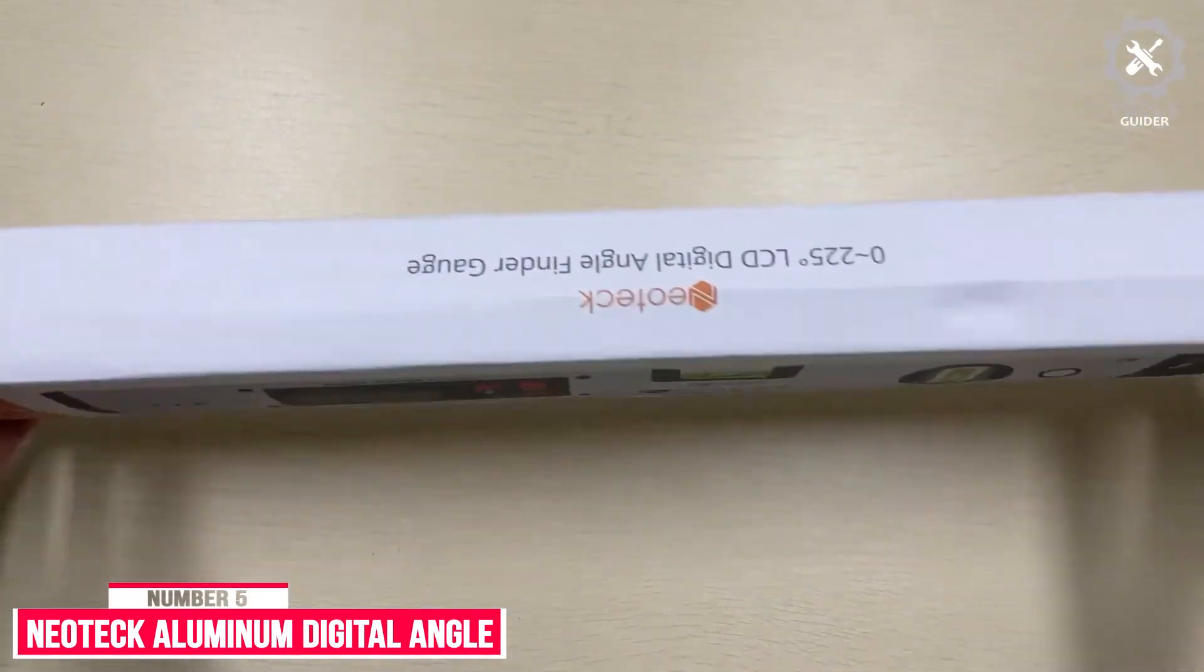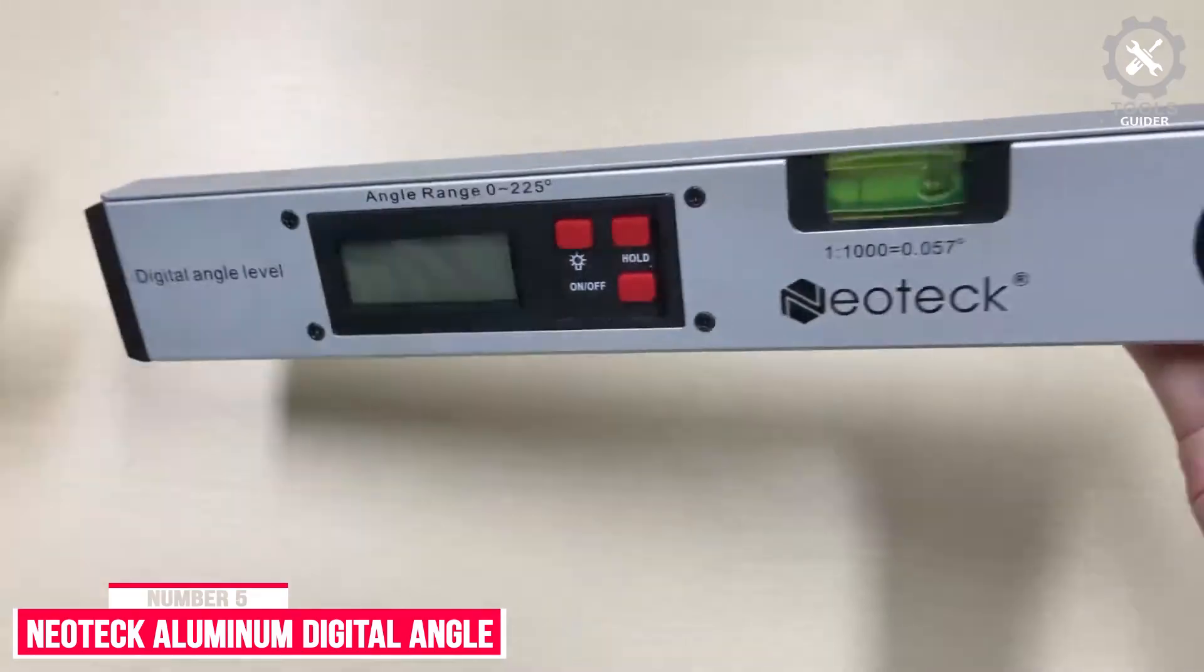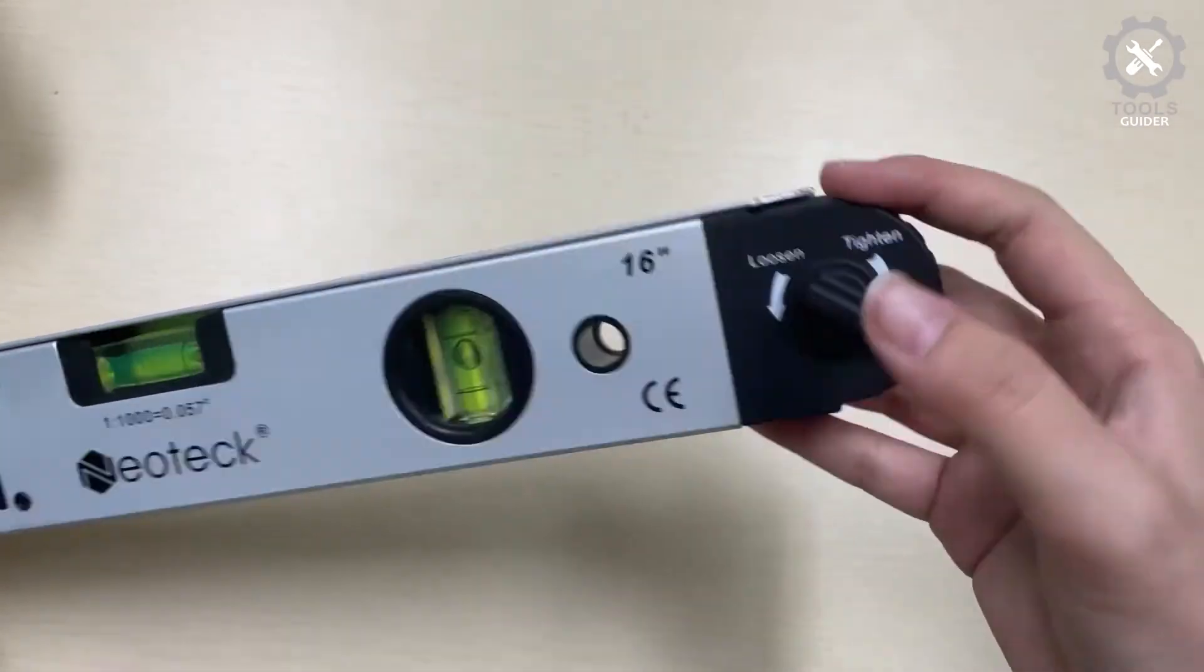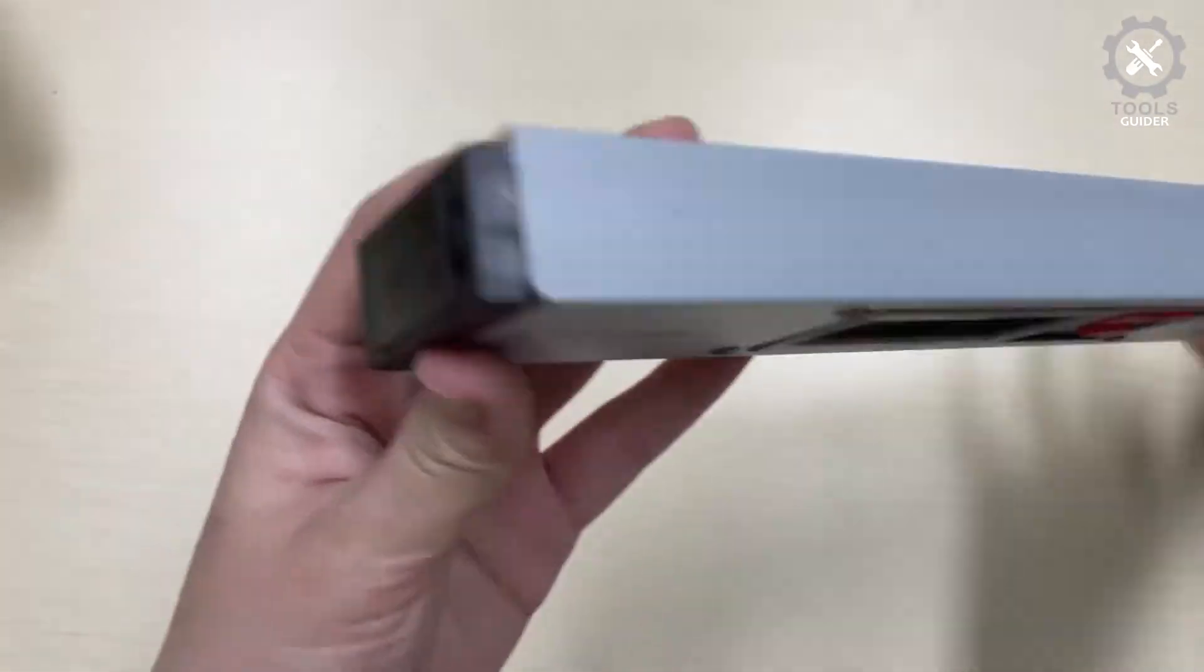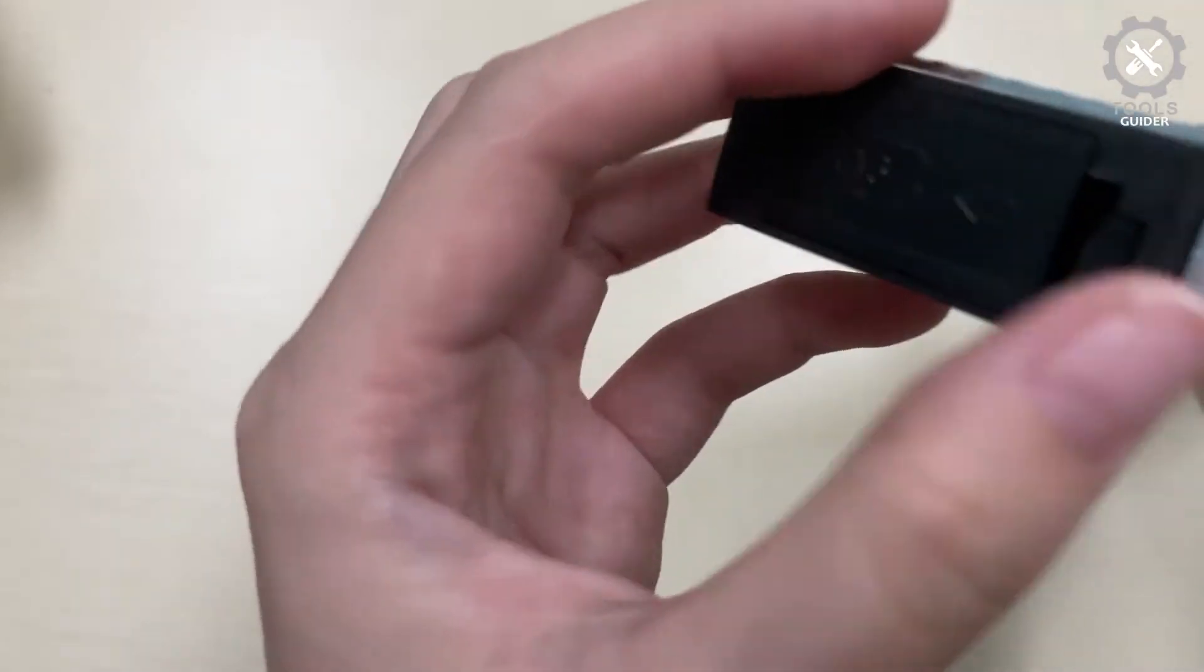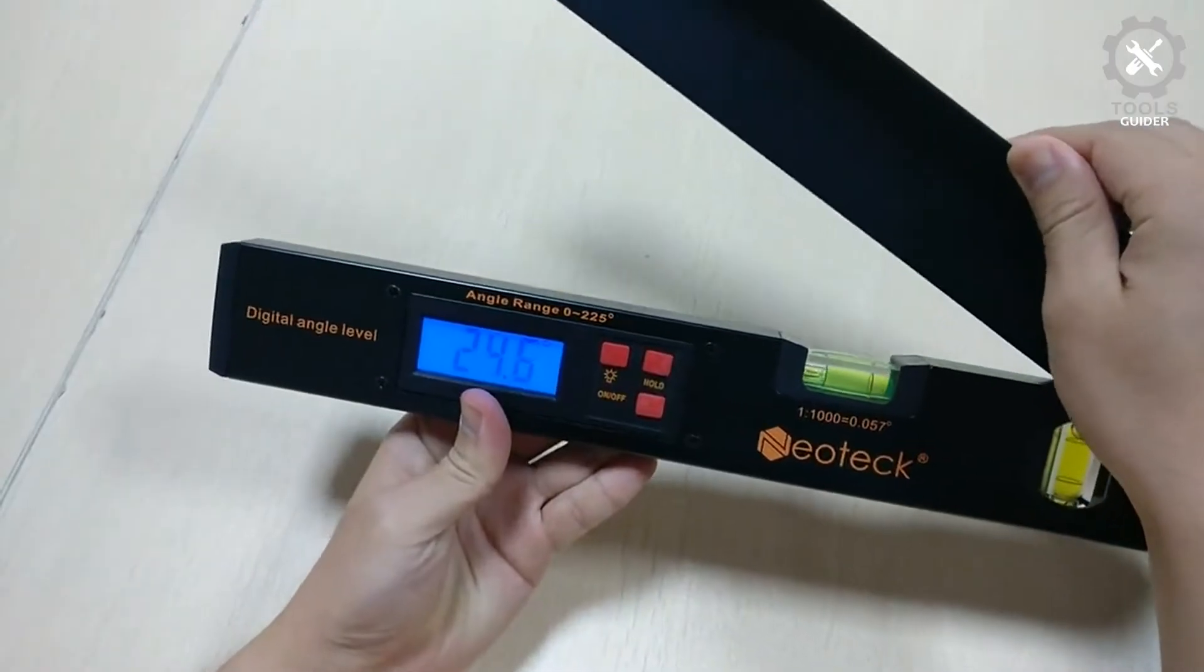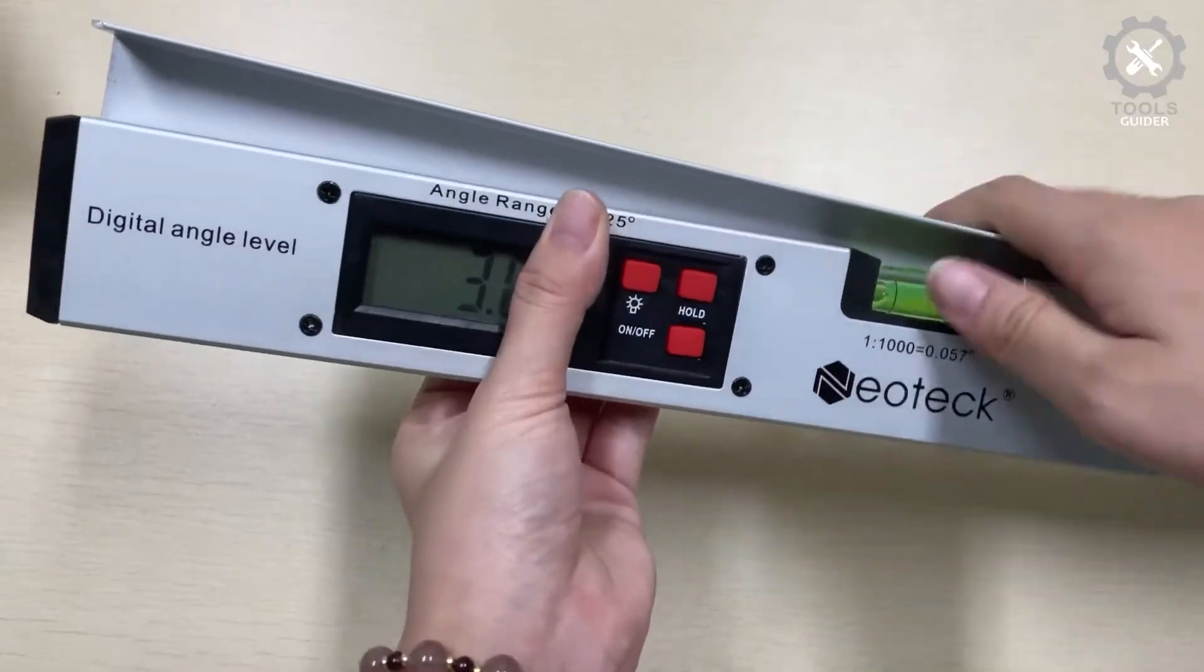The Neotec Aluminum Digital Angle Finder Protractor is a good quality digital angle protractor that will help you get through any project without much effort or hassle. This protractor comes with two spirit levels that are not digital.